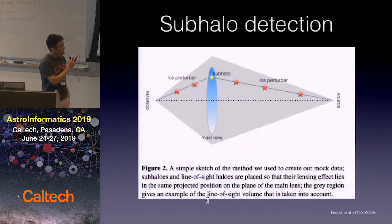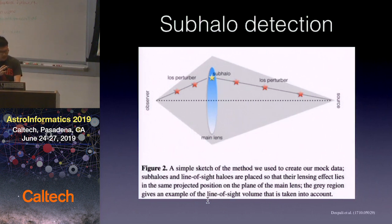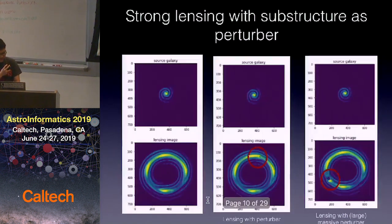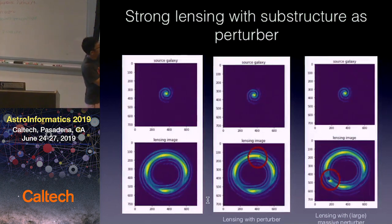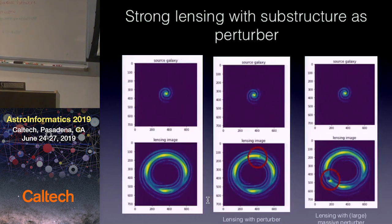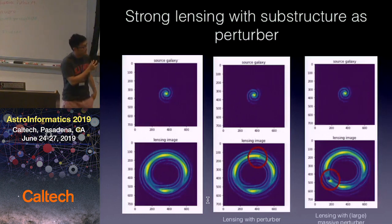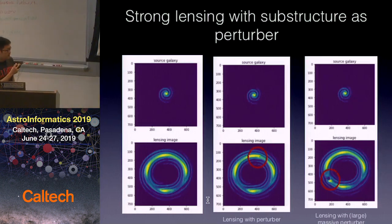If you have some subhalos on the line of sight of the strong lensing, in principle there will be deflection perturbations on the arc. For example, a spiral galaxy lensed by a smooth potential produces a beautiful Einstein ring with clear symmetry. But if you have subhalos near the strong lensing arc, it breaks that symmetry. And if you have even more massive subhalos, you will see an additional Einstein ring appear on the strong lensing arc.